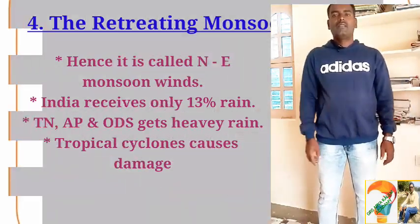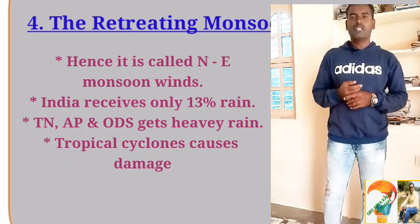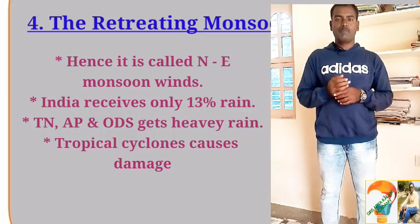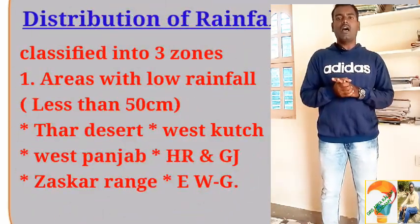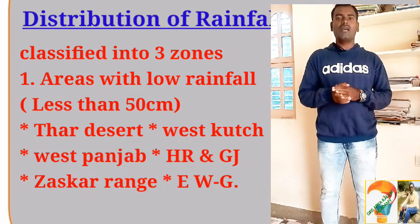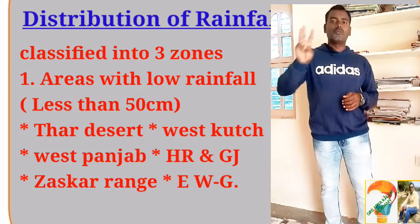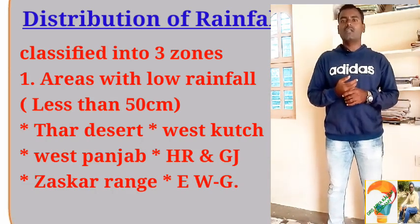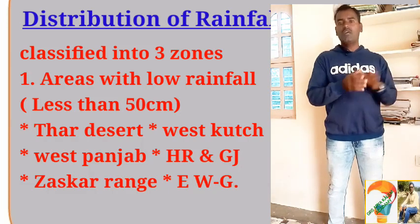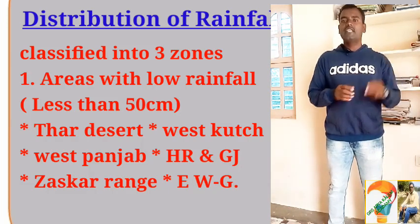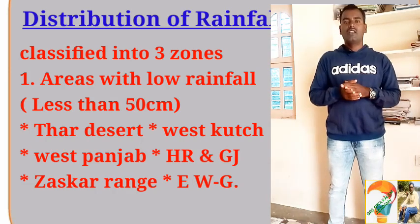The last topic is rainfall distribution in India. We classify it into three zones based on the amount of rainfall, because there is no uniform rainfall across all of India. The three categories are: first, areas with low rainfall; second, areas with medium rainfall; and third, areas with heavy rainfall.